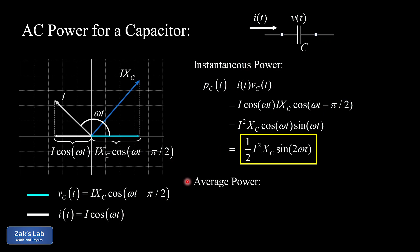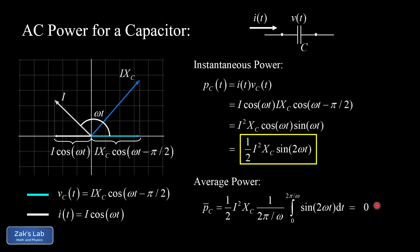The average power into the capacitor is computed via the usual average value integral of ½·I²·X_C·sin(2ωt) over 0 to 2π/ω — two full periods of the function being integrated. Since we're integrating a sinusoidal function over an integer number of periods, the average is zero. Energy is periodically stored in the electric field between the capacitor plates and then released again, giving a net average power of zero.